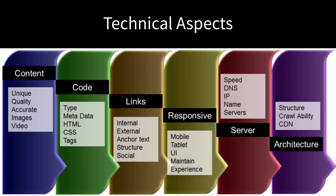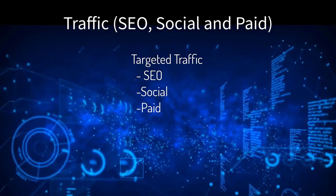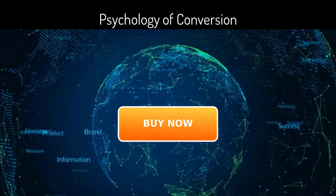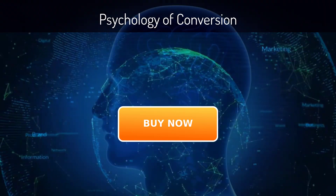Of course, all online marketing must have three elements in alignment: the technical aspects — servers, layout, code structure; the traffic — SEO, social, and paid; and the psychology of conversions.